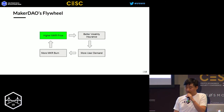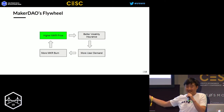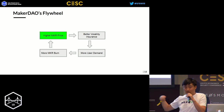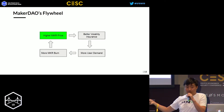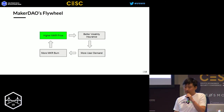For example, you can argue that MakerDAO has a flywheel. Higher MKR price means better volatility insurance — MKR's capitalization functions as volatility insurance. Better volatility insurance makes you a better stablecoin, which drives more user demand, more DAI, more people taking out loans, and more MKR burn. MKR burn means value capture back into the native token, which raises MKR price. So you have this positive feedback loop — a flywheel — with price as part of the network effect. We believe this is the most powerful form of flywheel crypto economics.